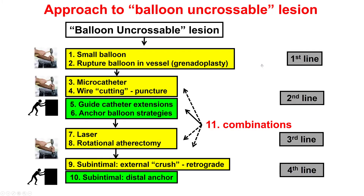So what to do next? This is an example of a microcatheter-uncrossable lesion, which is analogous to a balloon-uncrossable lesion. The first step for those lesions is to get a small balloon. If it doesn't work with plain balloon angioplasty, then use a combination of microcatheters or more support with guide extensions, then use laser atherectomy, and as a last step, use sub-intimal crossing techniques.